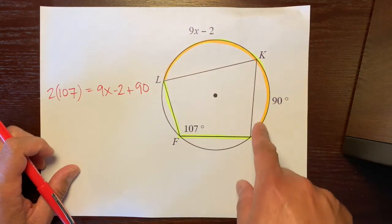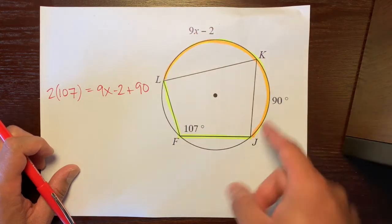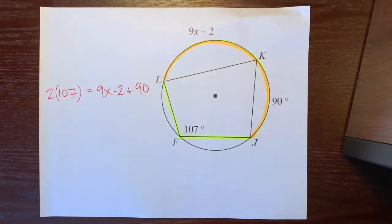So this entire arc is 9x minus 2 plus this arc, which is 90 degrees. And we're just going to solve it.